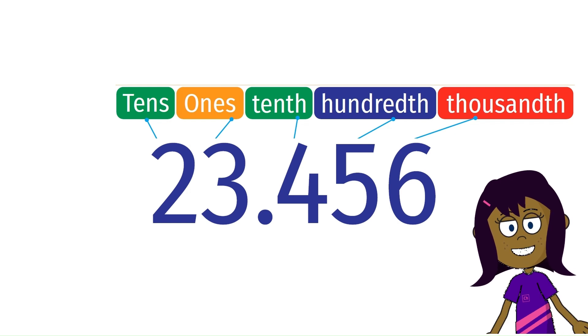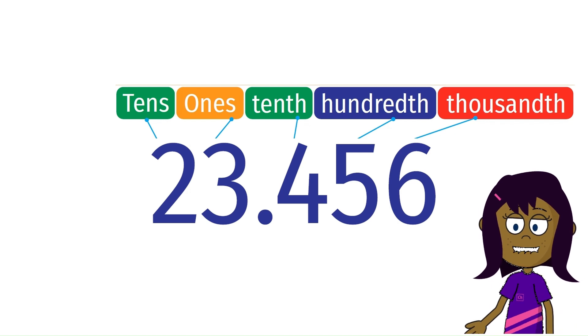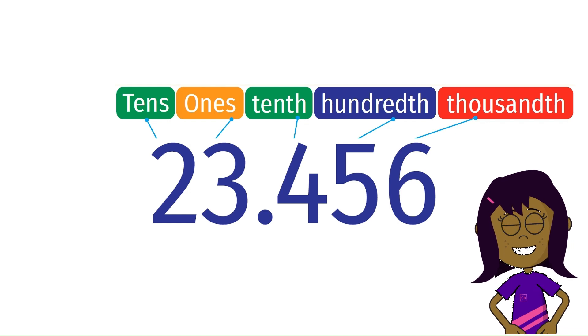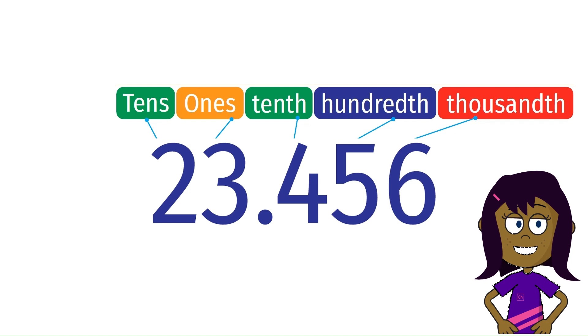Mind you, tenth is one divided by ten, hundredth is one divided by one hundred, thousandth is one divided by one thousand. Let us locate the number on the number line.